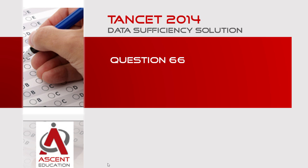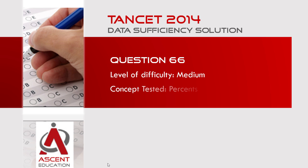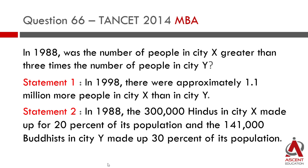This data-sufficiency question appeared in TANSAT 2014 MBA. It appeared as question 66, an easy to medium level difficulty question, from the topic 'persons.' In 1988, was the number of people in city X greater than three times the number of people in city Y?